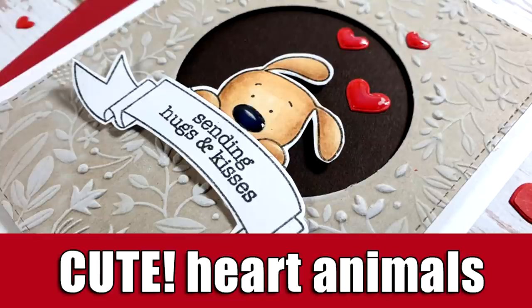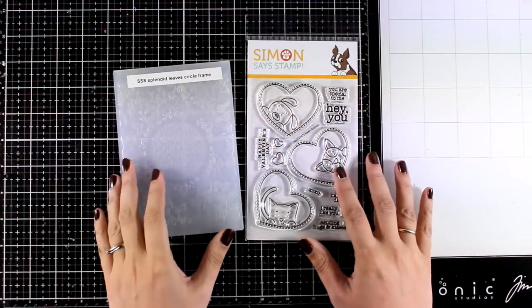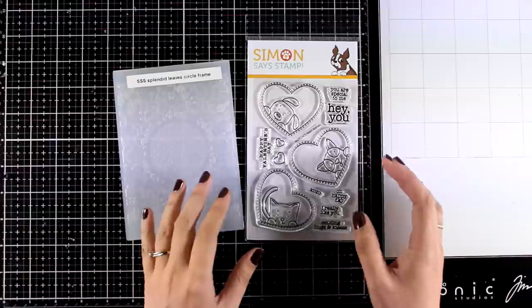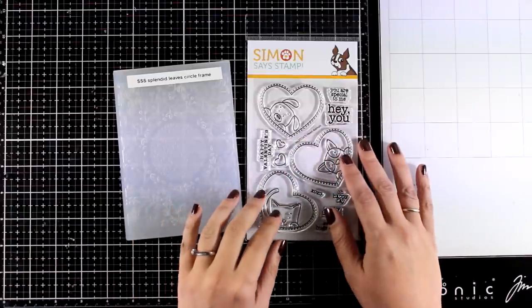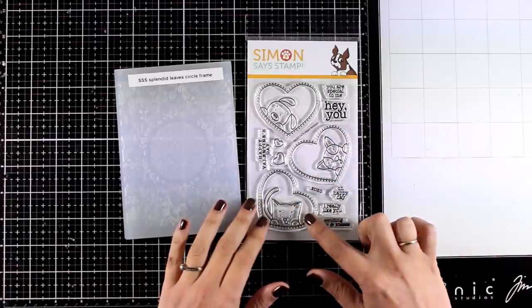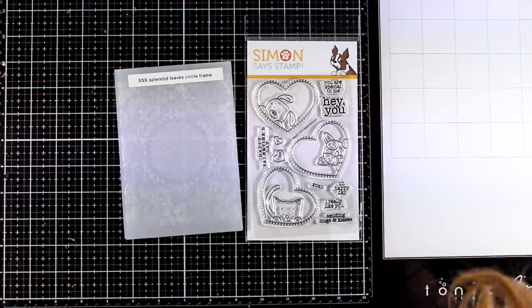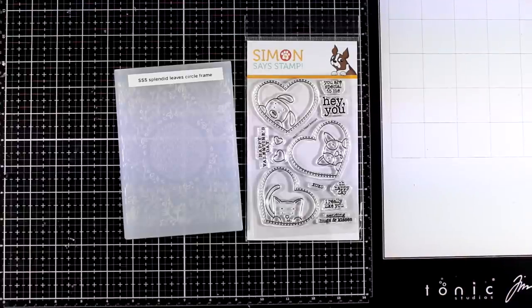Hi everyone and welcome back! Today I'm sharing a super cute card using one of the new released stamp sets by Simon Says Stamp. This is the Heart Animals which is absolutely adorable. It comes with three different animals inside stitched hearts that you can stamp along with lots and lots of sentiments. These are from the Love You release that have just came out.